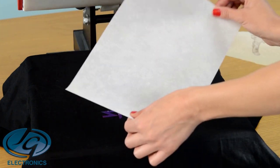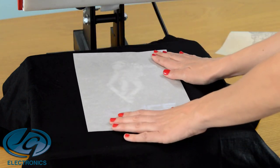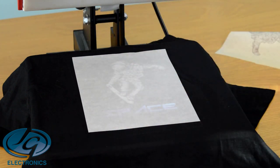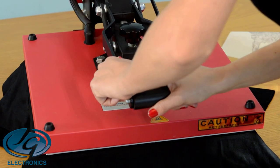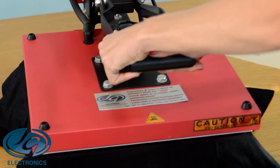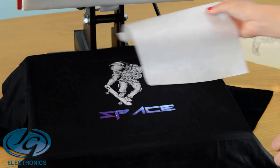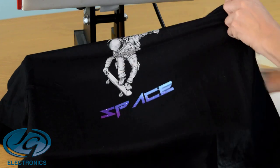Now you can take your silicone paper, put it on top, and press it for 12 seconds on 160 degrees. And look at that.